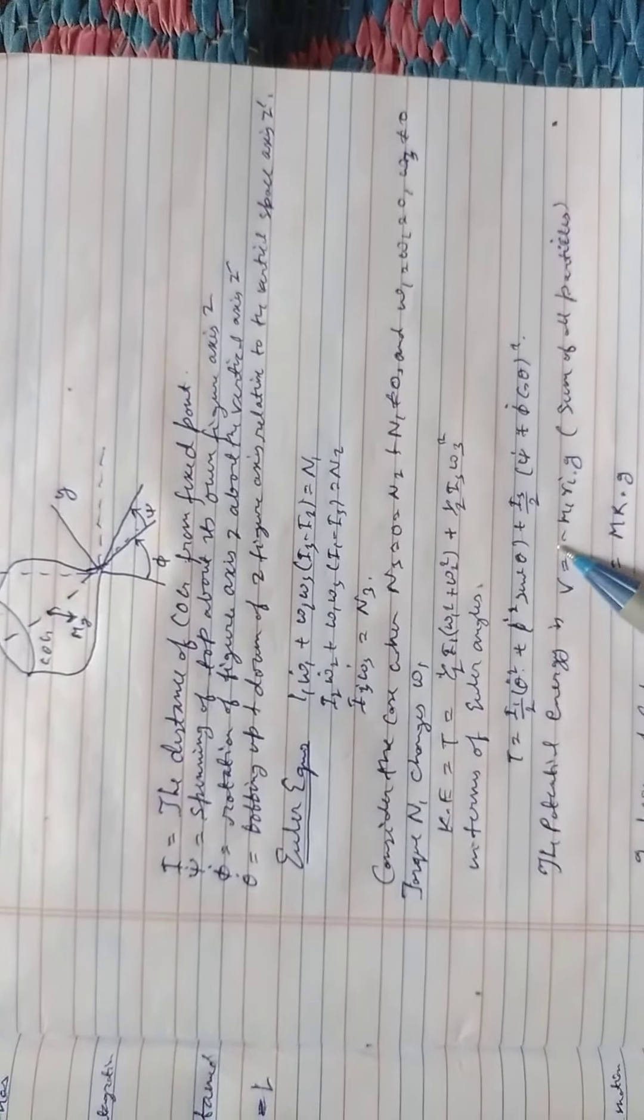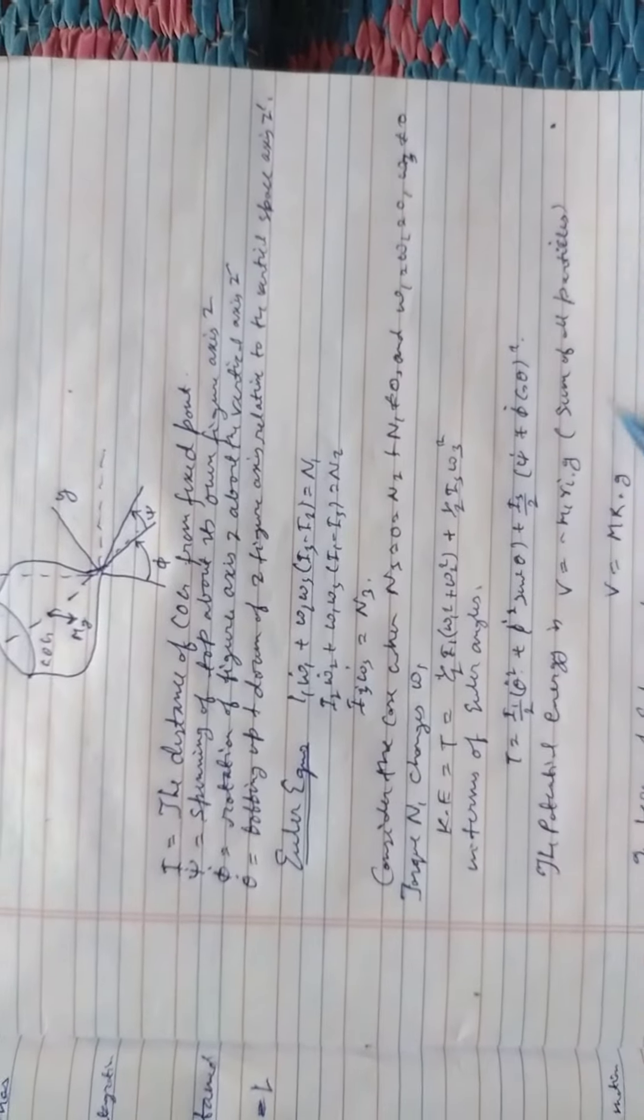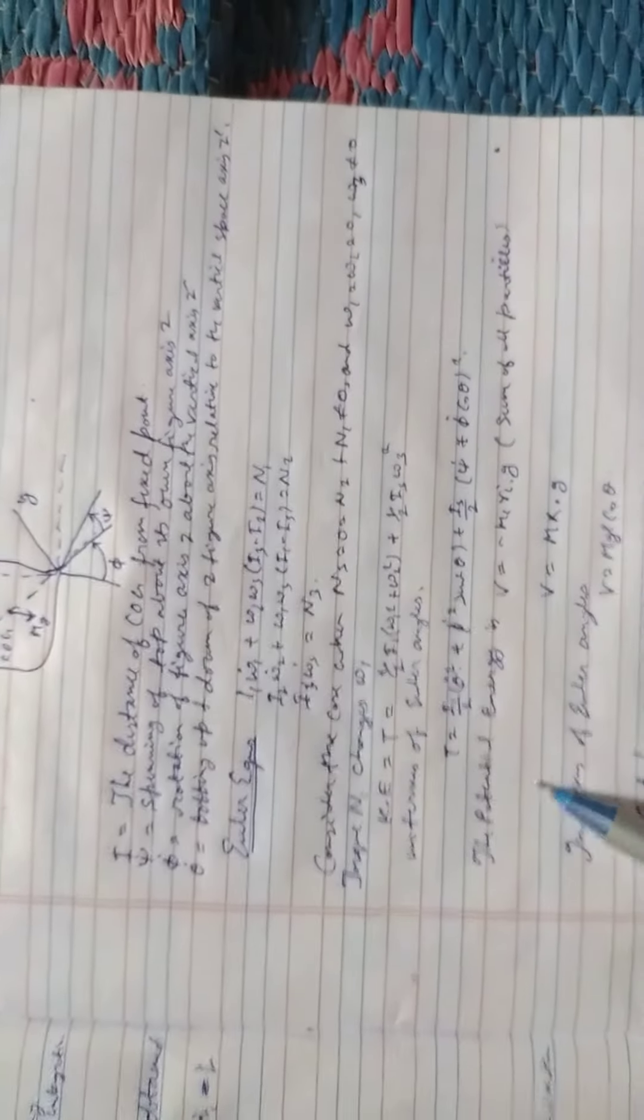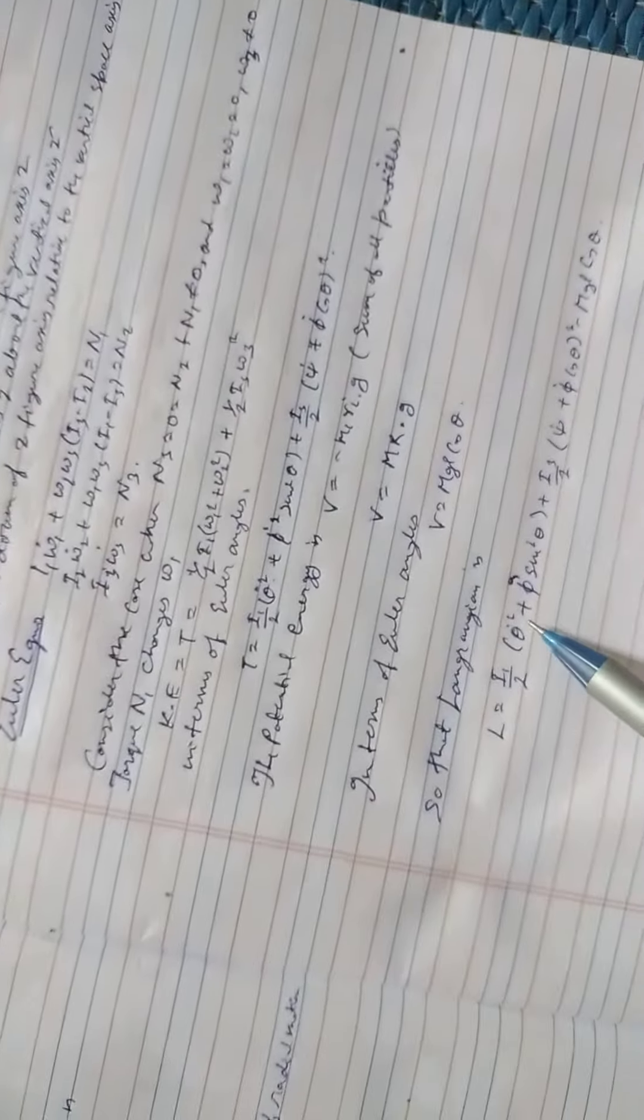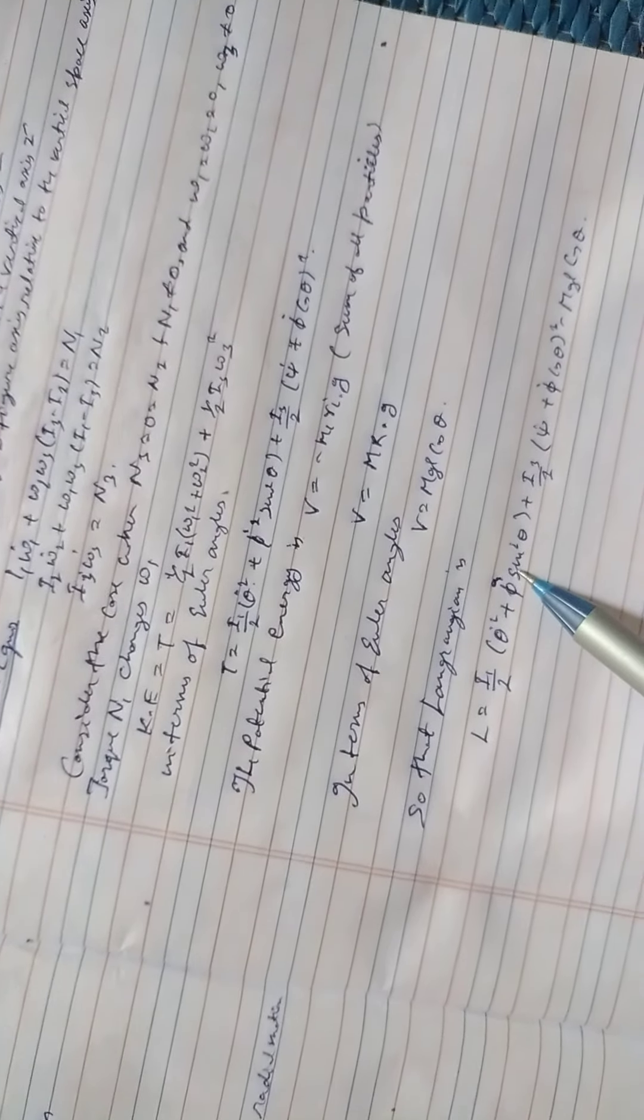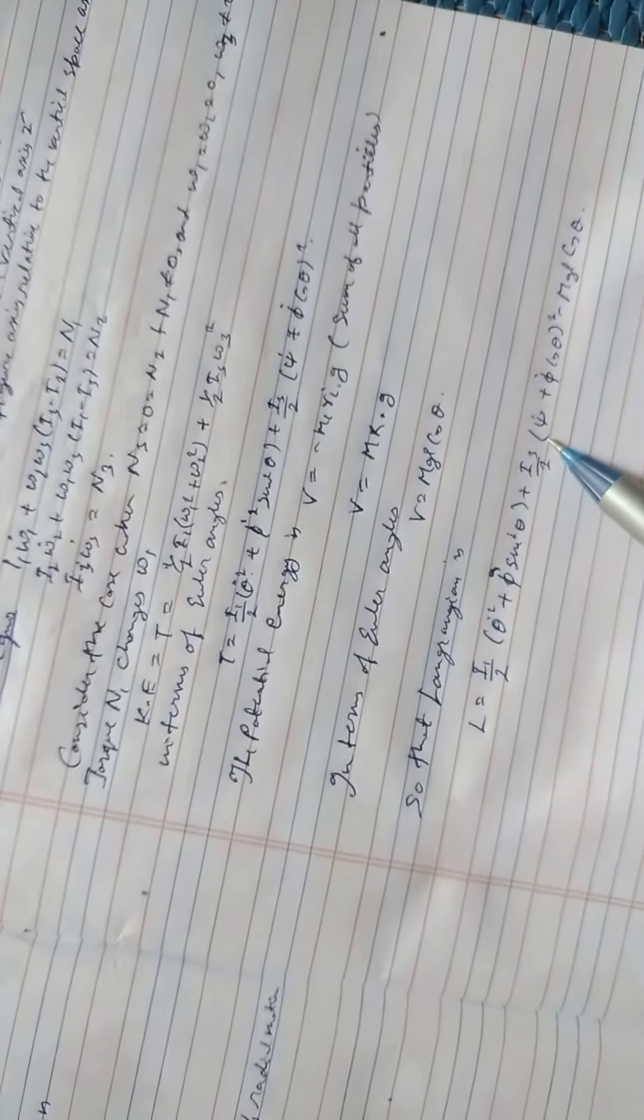The Lagrangian is equal to I1 by 2 times theta dot square plus phi dot sine square theta plus I3 by 2 times psi dot plus phi dot cosine theta square minus MgL cosine theta.